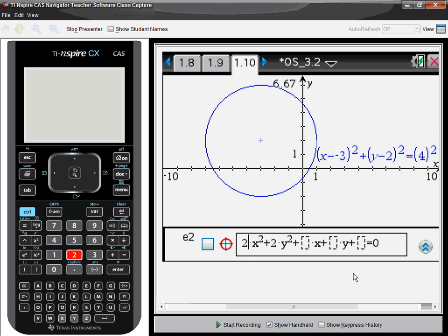Now here you'll notice if I put in a 2 in front of the x squared, it automatically puts a 2 in for the y squared. And hopefully you know why that would be the case.